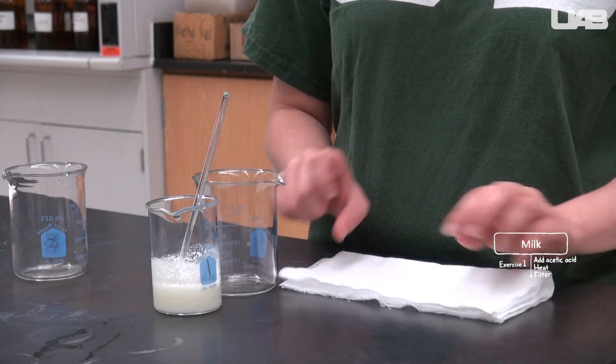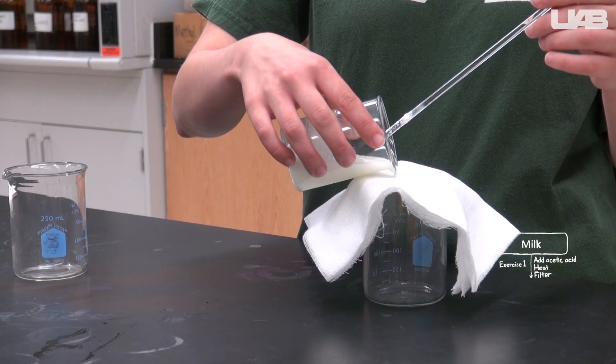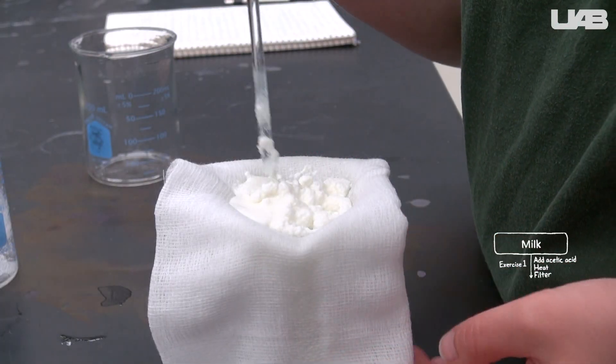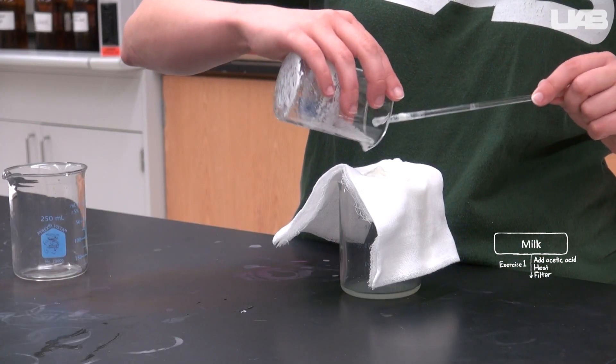Fold a piece of cheesecloth several times and place it over the beaker. Pour the mixture through the cheesecloth to separate the liquid from the solid protein and fat. You can use the stir rod to encourage more of the liquid to go through. Try to get everything out of the beaker.